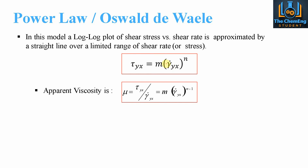The apparent viscosity is given by mu, and mu is the relationship between the shear stress and the shear rate — we know that this is a rate because we have a dot here. This can also be equal to m multiplied by the shear rate to the power n minus 1. This is where the relationship can be attained in order to determine the apparent viscosity.